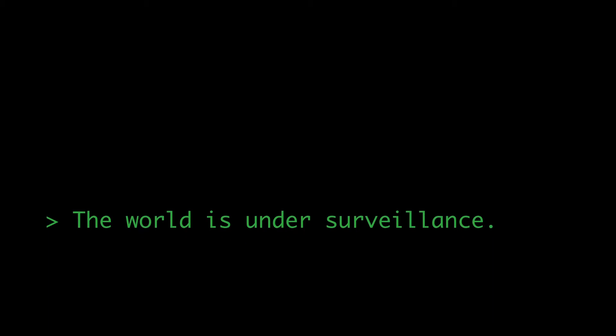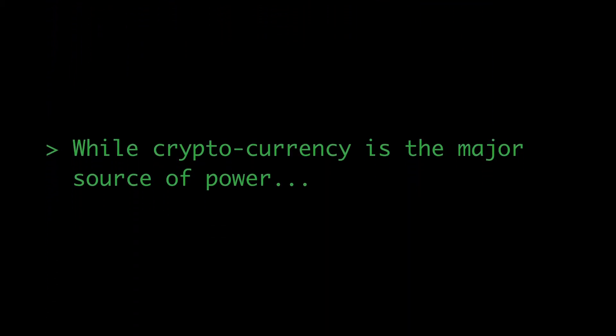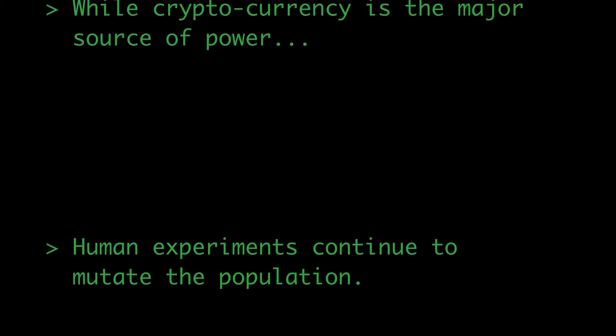The world is under surveillance. While cryptocurrency is the major source of power, human experiments continue to mutate the population. Still, some try to resist, living off-grid.